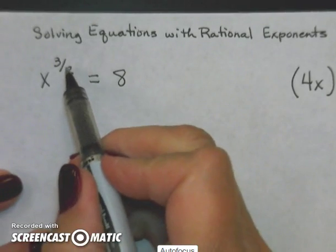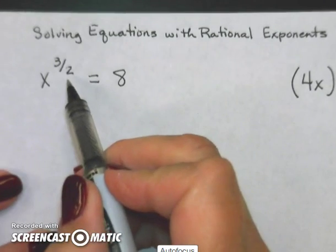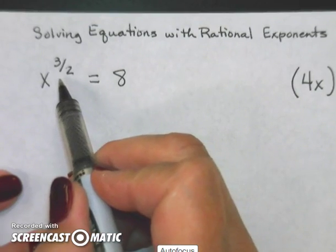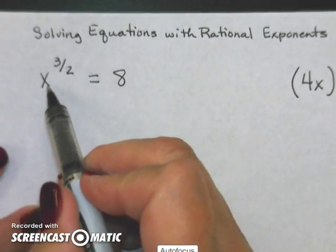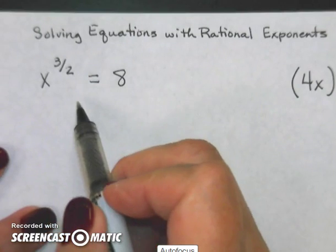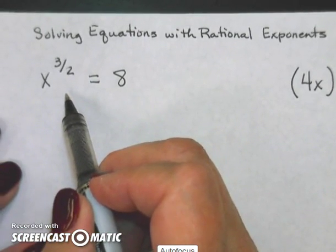This problem with my 2 as the denominator means it's a square root. I'm taking x to the 3 halves power. Well the half is the square root portion of it.